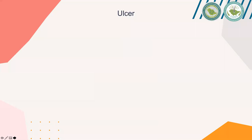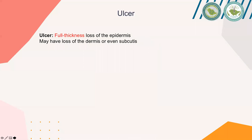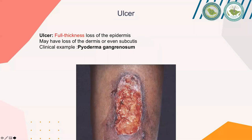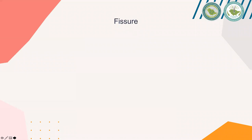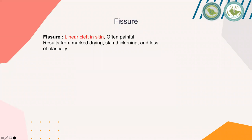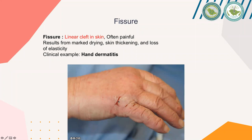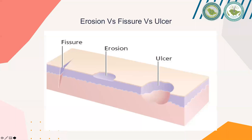Ulcer is a full thickness loss of epidermis, dermis, and subcutaneous tissue. A clinical example is pyoderma gangrenosum, usually manifested in inflammatory bowel disease, especially ulcerative colitis — seen as an ulcerative lesion over the shin of the tibia surrounded by violaceous borders. Fissure is a linear cleft of the skin, often painful, caused by skin thickening, marked dryness, or loss of elasticity. A clinical example is hand dermatitis, with fissures over the dorsum of the right hand and little finger.